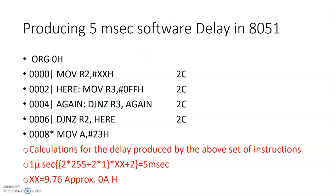Now let's see how we can generate a delay of more than 511 microseconds. The maximum value that can be saved in an 8-bit register is FF, which generates only about 511 microseconds. If we want, say, a 5-millisecond delay, we can use a loop within a loop — normally called nested looping. You can see there is one inner loop, and above it another outer loop.